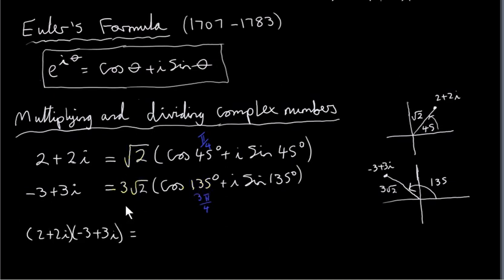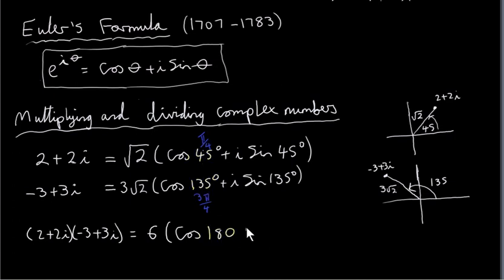When we multiply two complex numbers together, we multiply their moduli: root 2 multiplied by 3 root 2 gives 3 times 2, which is 6. The argument of the product is got by summing the arguments: 45 plus 135 is 180 degrees. The cos of 180 is minus 1, so we have 6 times minus 1, which is minus 6. The sine of 180 is 0, so we have 6 times 0, which is 0. So our answer is minus 6.